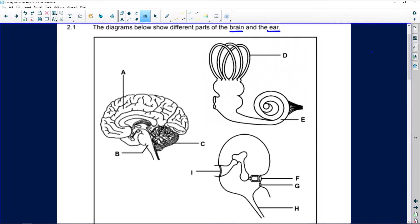So A is the cerebrum. The rule is always write in the labels. B is the medulla oblongata. And remember, your medulla oblongata regulates all your vital functions in your body.